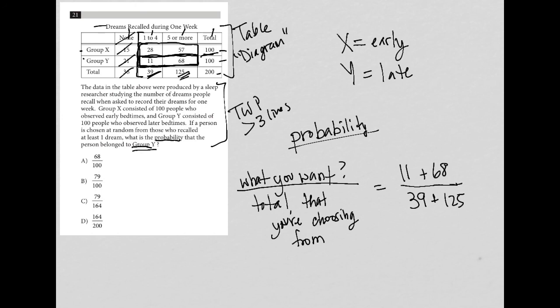So all that's left is to do some simple math. You can use your calculator. I do suggest that. So 11 plus 68 is 79, so that's my numerator. And then 39 plus 125 is 164, so that's my denominator. And we see that that answer is listed here as choice C.